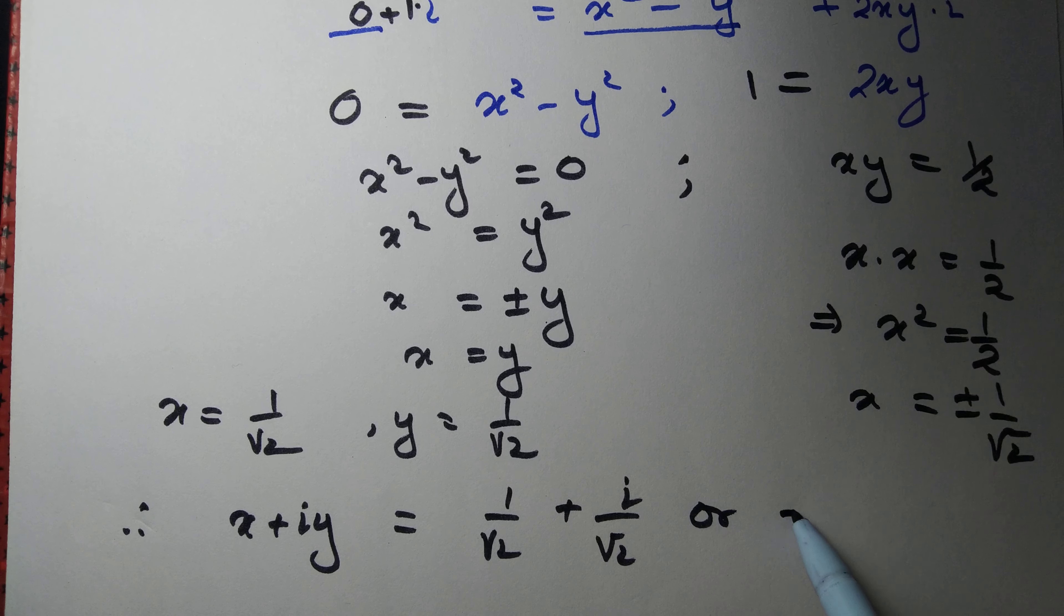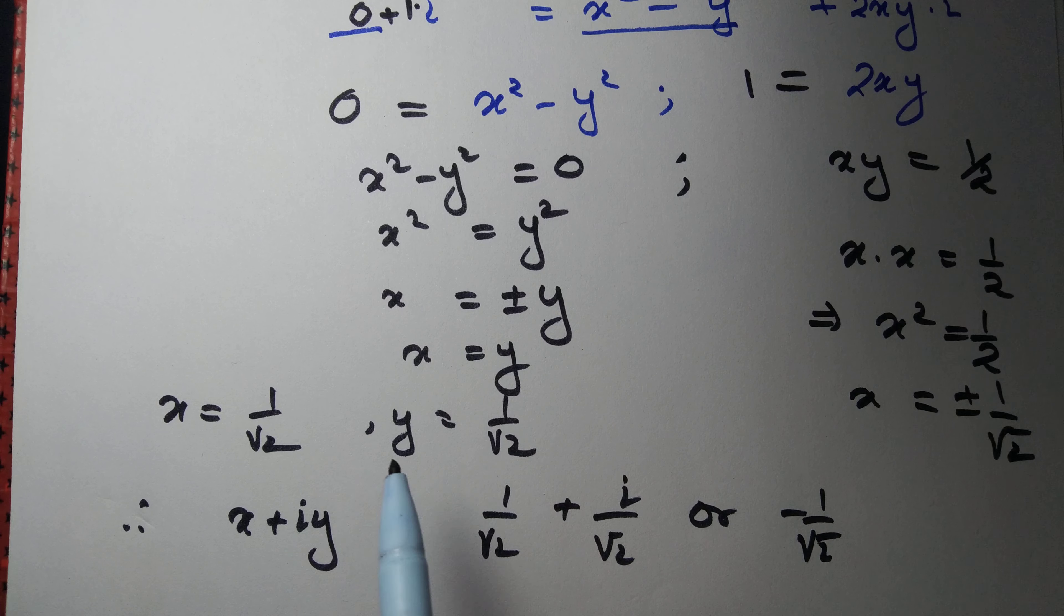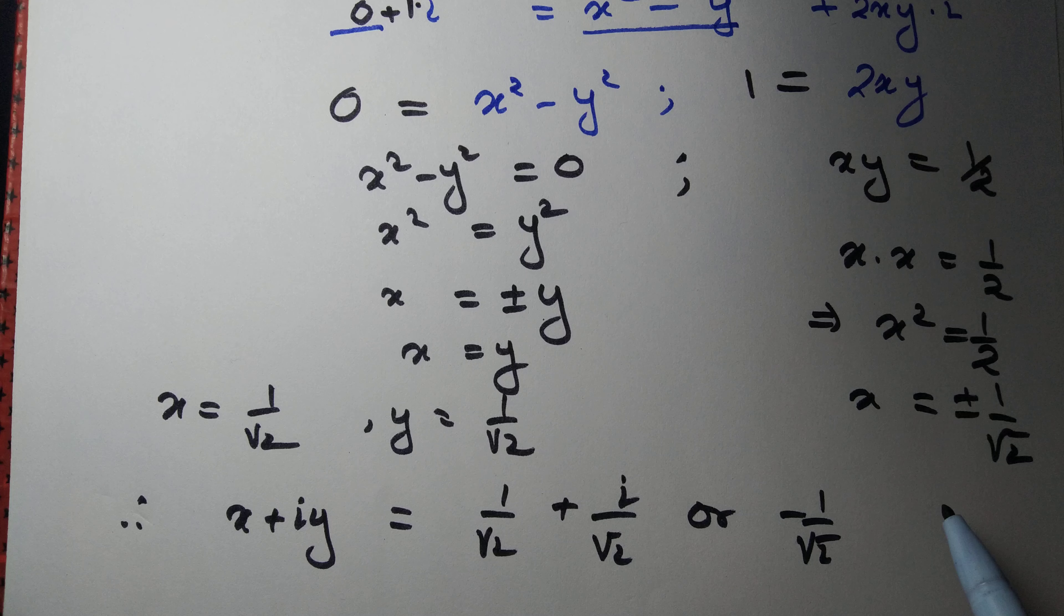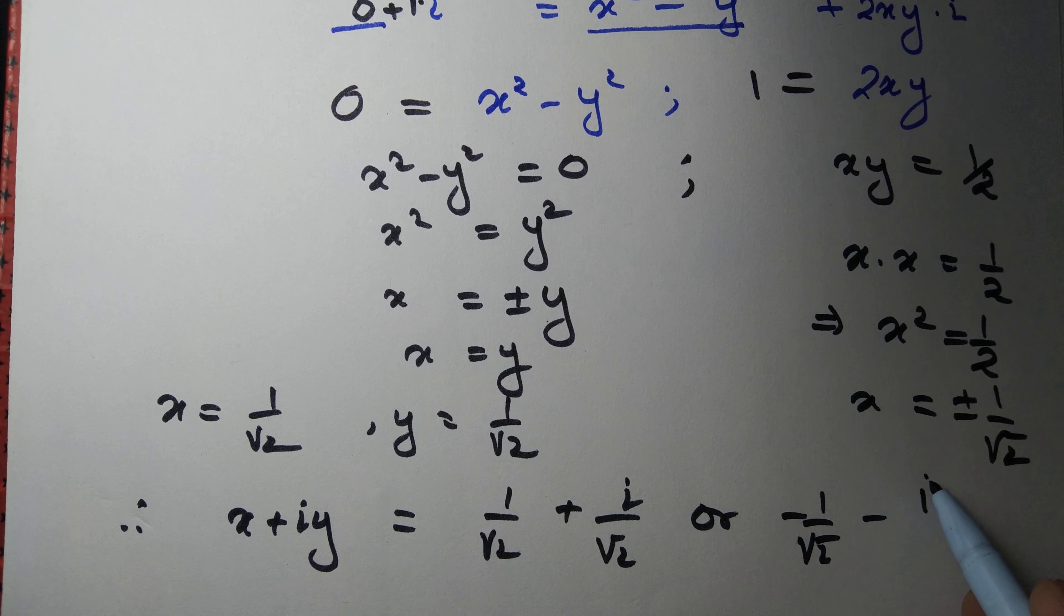Or, minus 1 by root 2. When x is minus 1 by root 2, y is equal to minus 1 by root 2 as well, because x equals y. Minus i by root 2.